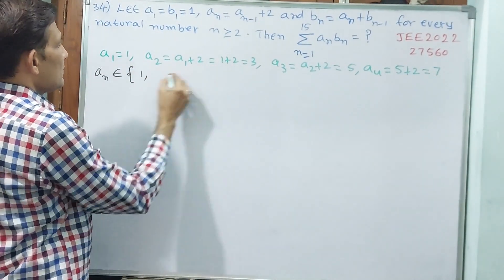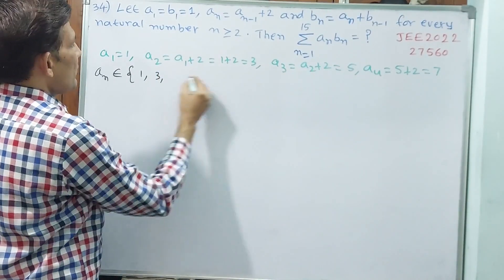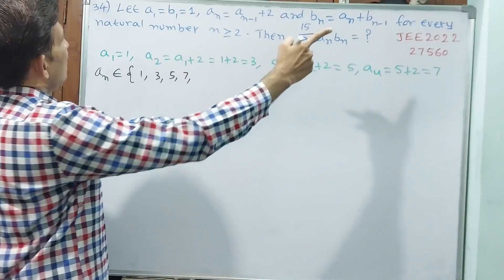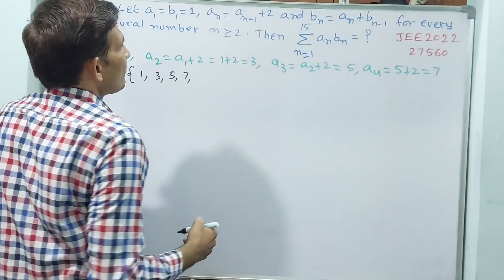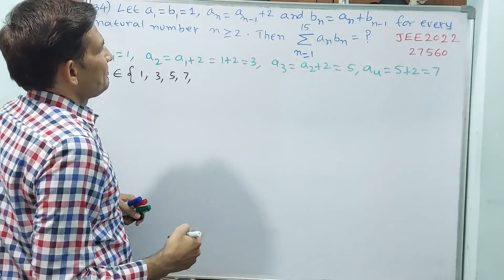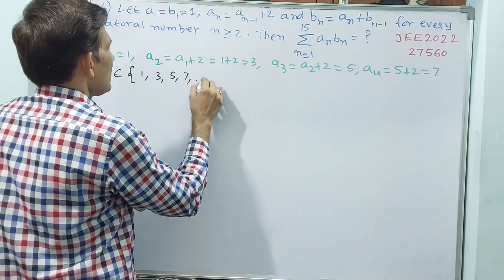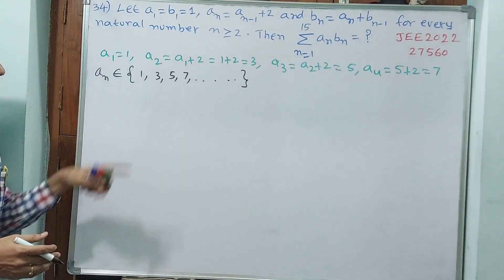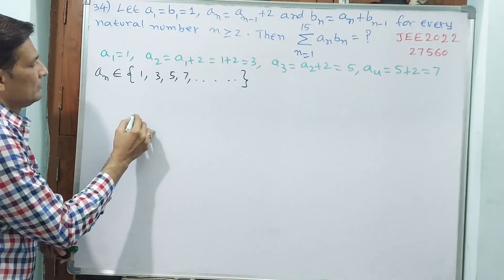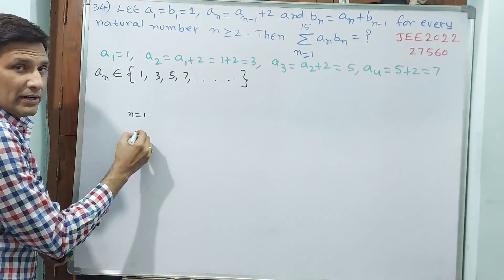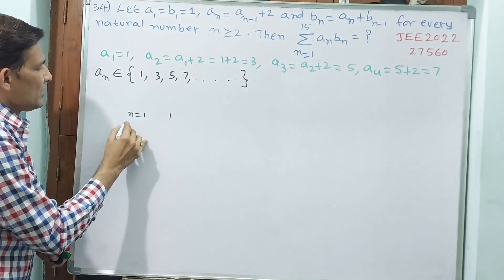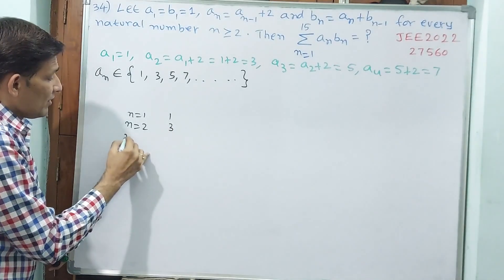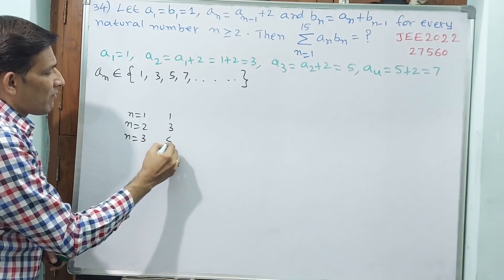Now you see, 1 comma, 3 comma, 5 comma, 7 comma, but up to 15 you have to go. Let it be. What do you understand from here? First term is 1, n is equal to 1, first term is 1. Second term, n is equal to 2, second term is 3. Third term is n is equal to 3, but 5.